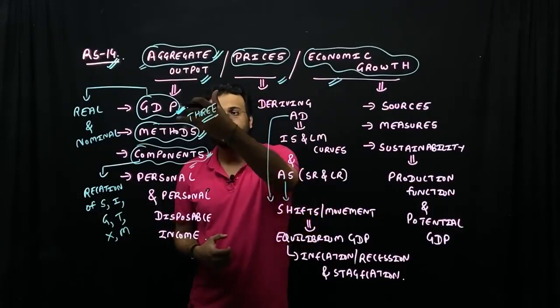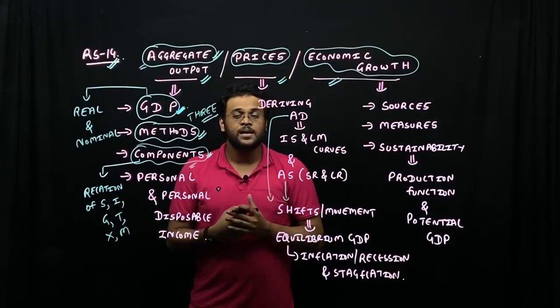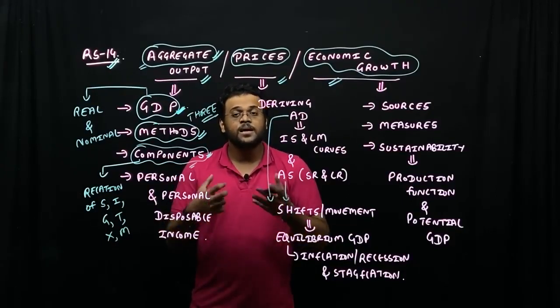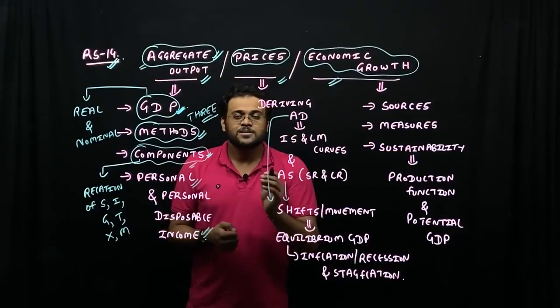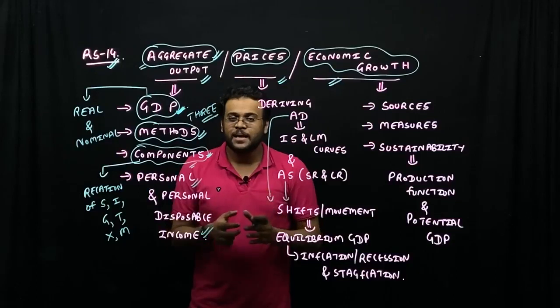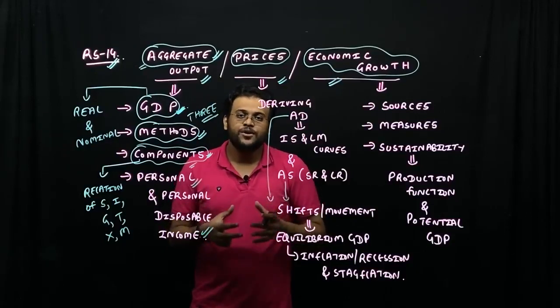So when we talk about it, we will talk about GDP, we will talk about national income. And after the national income, we will talk about two terms: personal income and personal disposable income. Basically, national income is the whole factor income.